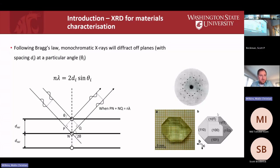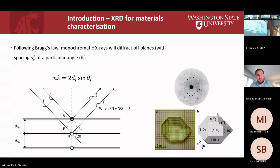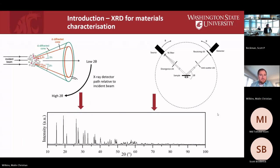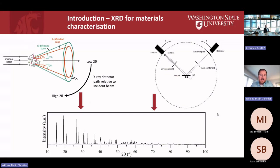Hopefully this is familiar to all of you, but I included it because you have quite a wide range of areas of speciality. Looking at Bragg's Law, we have in theory monochromatic X-rays that diffract off planes at a particular angle theta. For a single crystal you get spots, and for a powder you get cones. Running a detector from a low angle to a high angle in two-theta gives a nice diffraction pattern.